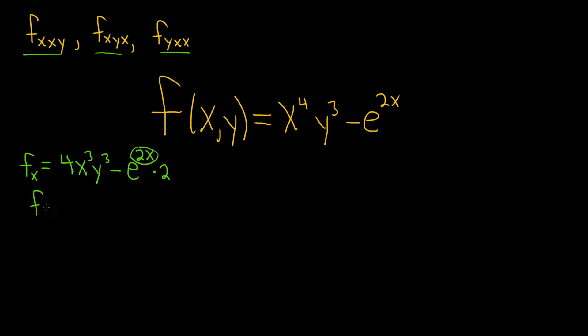Let's go ahead and rewrite this. f_x is equal to 4x cubed y cubed minus 2e to the 2x. Let's keep working on this one.